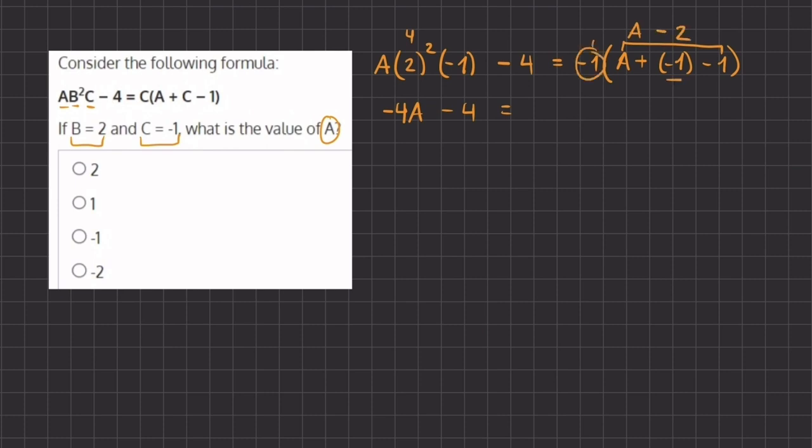So now if we distribute this negative 1 into what's inside our parentheses, we have negative 1 times A, which gives us a negative A, and negative 1 times negative 2 gives us a positive 2, because a negative times a negative gives us a positive.